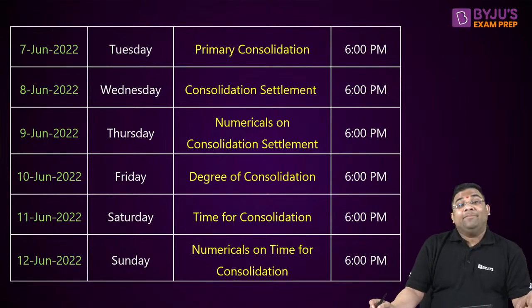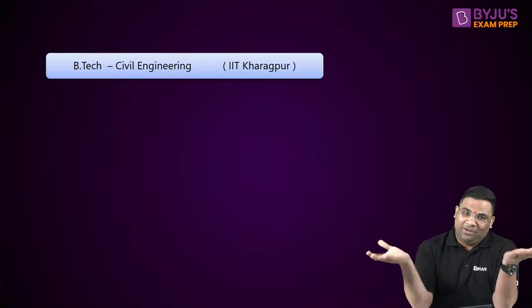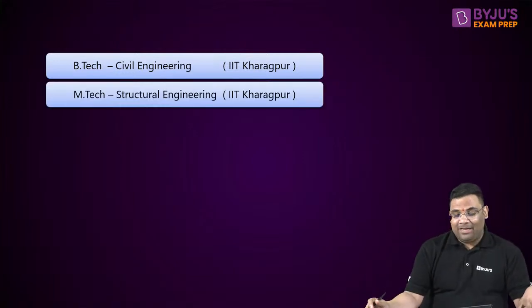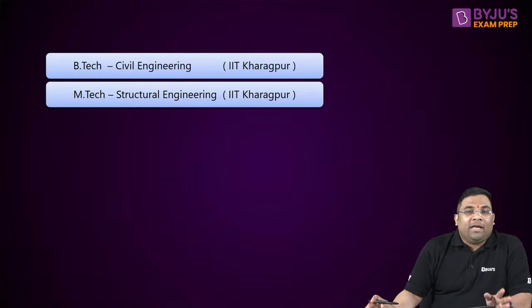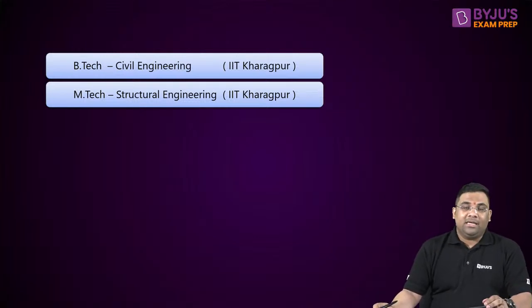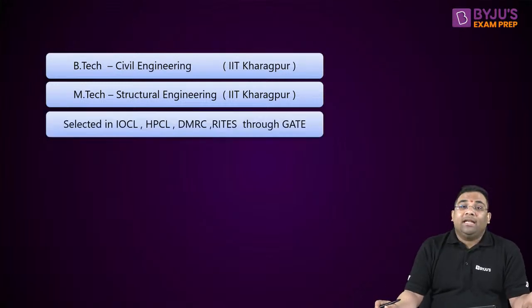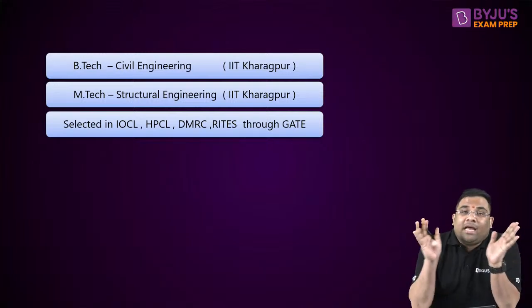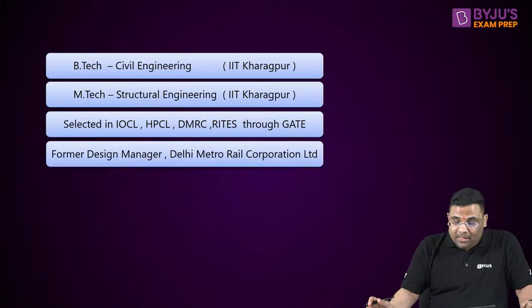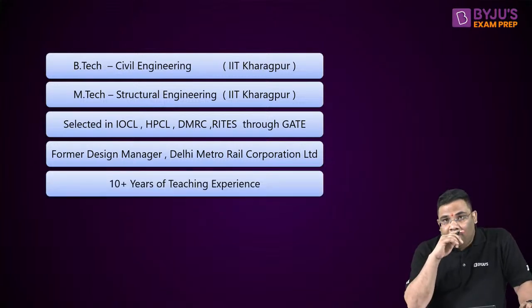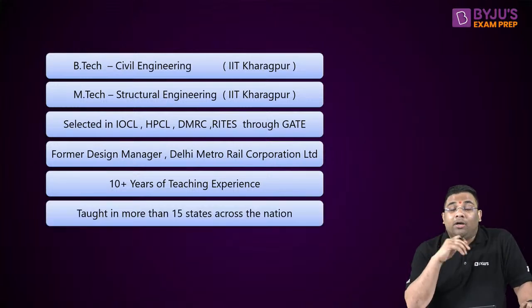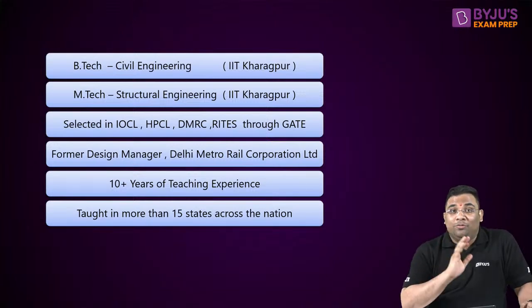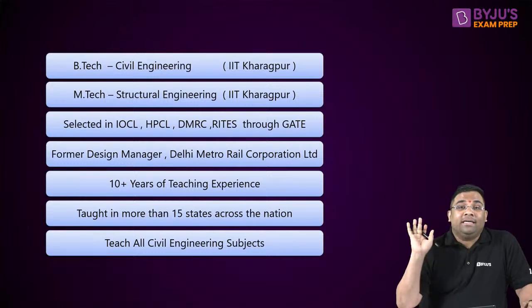A brief introduction about myself: my name is Satyaji Sahu. I did my B.Tech from IIT Kharagpur in Civil Engineering and then my Masters in Structural Engineering from the same IIT Kharagpur. After my Masters, I applied for GATE and was selected into many PSUs — DMRC, IOCL, HPCL, and RITES. I chose DMRC and served as Design Manager of Delhi Metro Rail Corporation for two years. I have been in the GATE industry for the last 10 years and have taught all across the nation, from North to South, East to West, covering all Civil Engineering subjects.